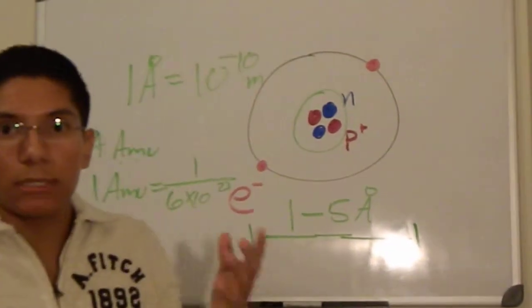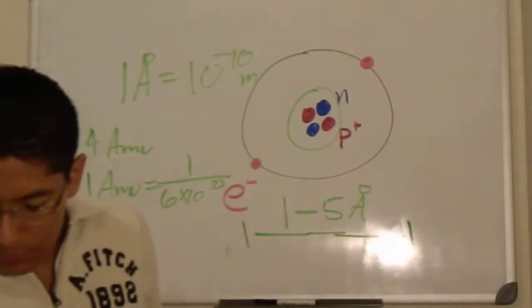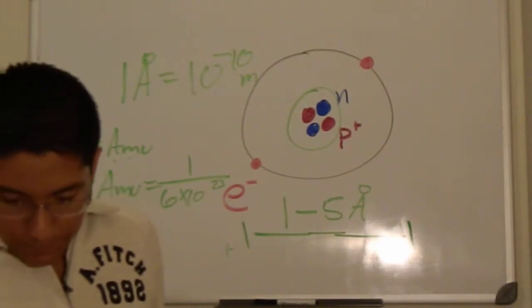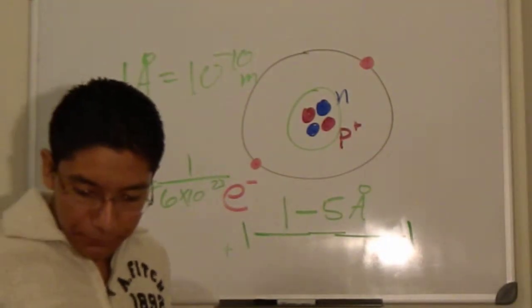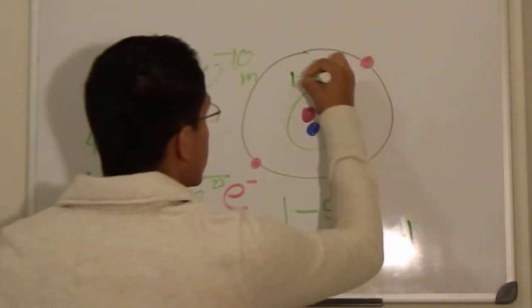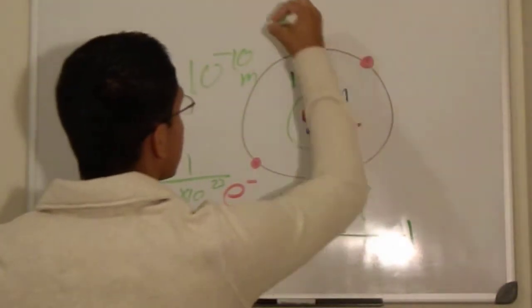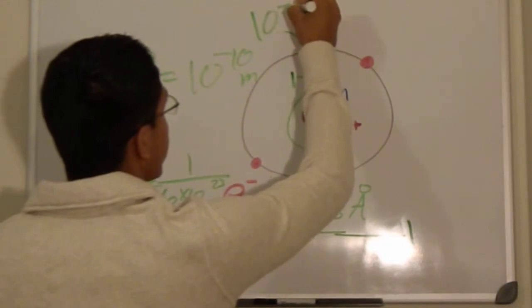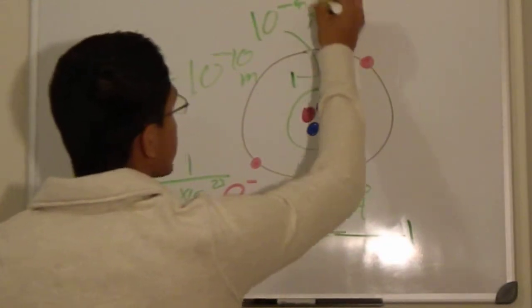Okay, so that just gives you a scale of how big this is. Yeah, it actually says here that this is about 10 to the negative 4 angstroms.